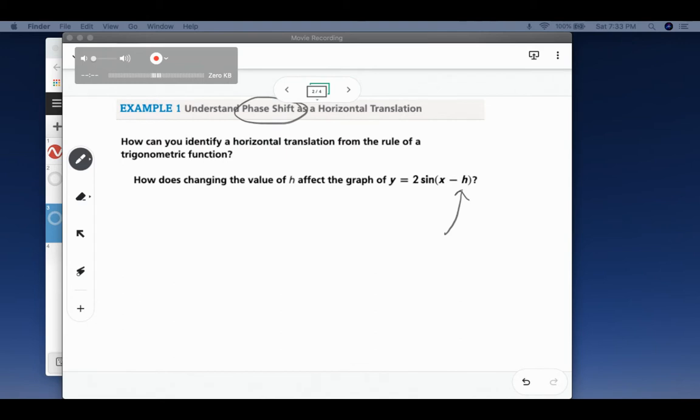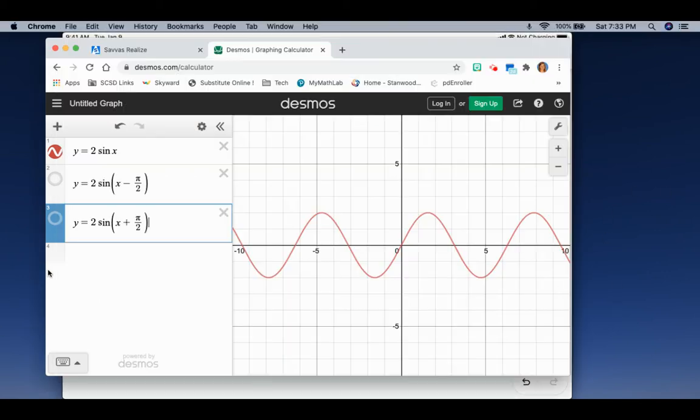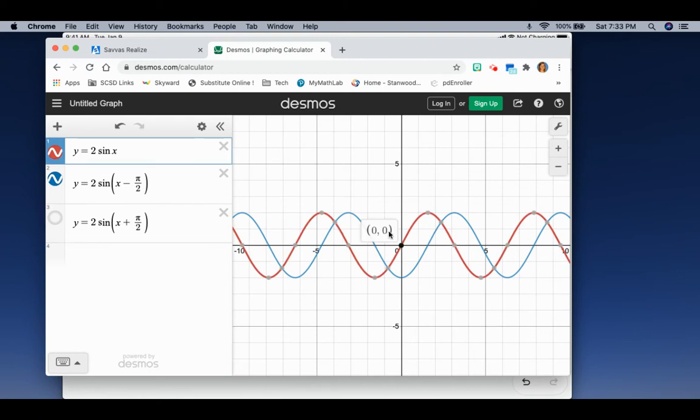But it is a horizontal translation. So if we have x minus h, that's going to shift our graph to the right, and if we have x plus h, that's going to shift our graph to the left. So again, that's why I did this type of video so that we can see on Desmos. You can type y equals 2 sine of x, so here's our original function. And if I click on this one, this is x minus pi over 2. So you can see that our 0, 0 point is now at pi over 2. So we shifted to the right, pi over 2. That was a phase shift.